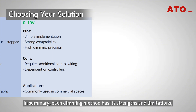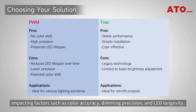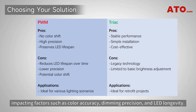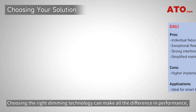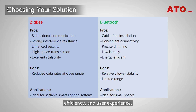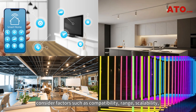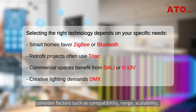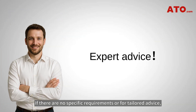In summary, each dimming method has its strengths and limitations, impacting factors such as color accuracy, dimming precision, and LED longevity. Choosing the right dimming technology can make all the difference in performance, efficiency, and user experience. When choosing a dimming technology, consider factors such as compatibility, range, scalability, control granularity, and ease of use based on your actual needs and budget. If there are no specific requirements or for tailored advice, consult with lighting professionals for optimal selection.